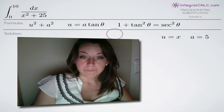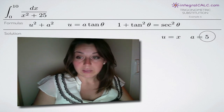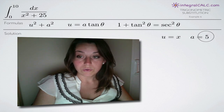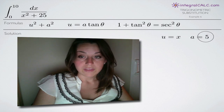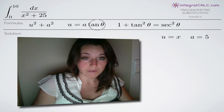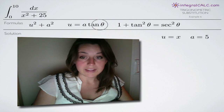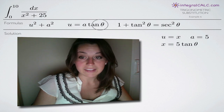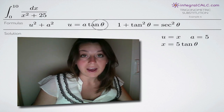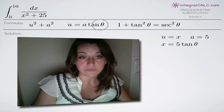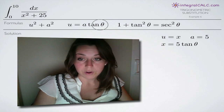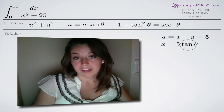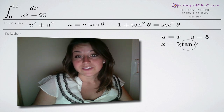So we say u equals x and a equals 5. Once we find those two values, we plug them into the second part of our formula: u equals a tangent of theta. What we get is x equals 5 tangent of theta — we plugged in x for u and 5 for a.